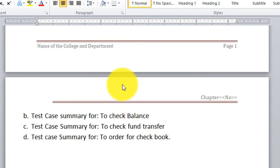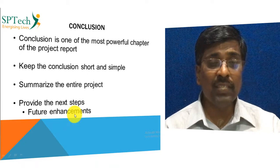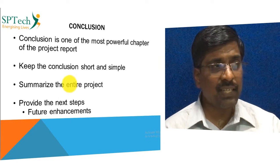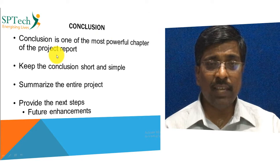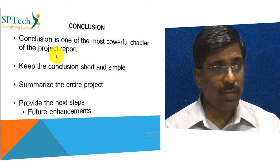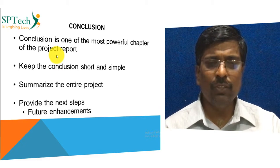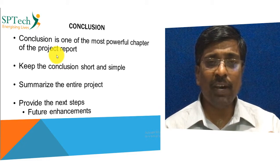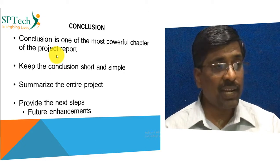This completes the testing chapter of your project report. Once you have completed the testing chapter, the next thing is to write the conclusion chapter. The conclusion is one of the most powerful chapters because it gives a complete overview of all the work you have done. Keep the conclusion short and simple — do not write more than one page; generally one or maximum two paragraphs.